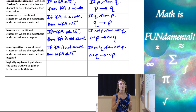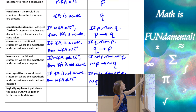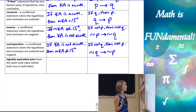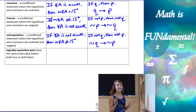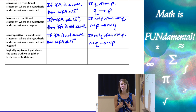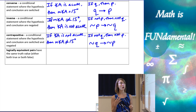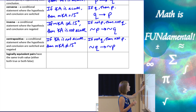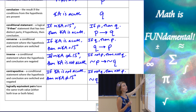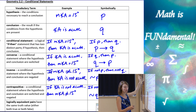So there are all of our different types of statements for today: conditional statement, converse, inverse, and contrapositive. Now the last part of this lesson talks about logically equivalent statements. Logically equivalent statements are pairs of statements that have the same truth value — they're either both true or both false. Let's go back and talk about which of these are true and false.